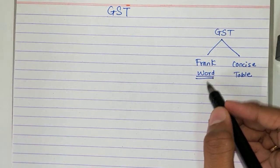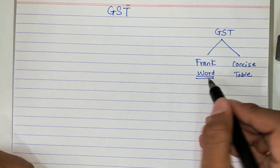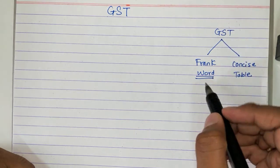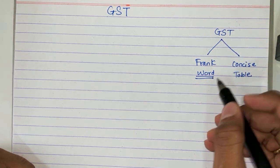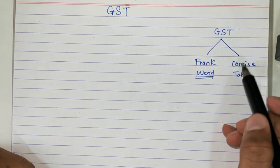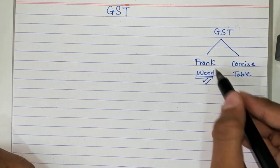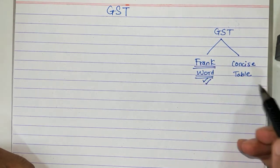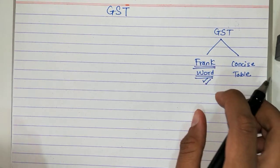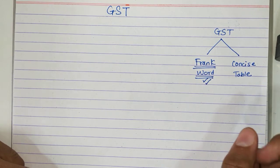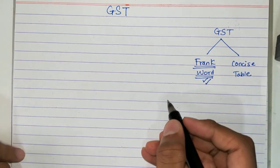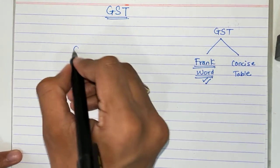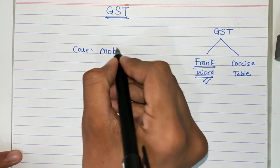Word problems are more important because this year there was a word problem which came from GST. This was the first year for this chapter and your batch will be the second year to study it. There is only one exercise in Frank which has around 30 to 35 questions. I'll explain GST using the case of a mobile phone.